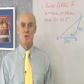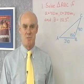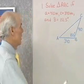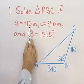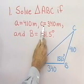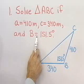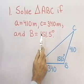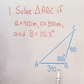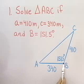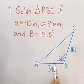In this section, we use the law of cosines to solve for the missing parts in some triangles. For our first problem, we have to solve triangle ABC if side A is 410 meters, side C is 340 meters, and angle B is 151.5 degrees. You can see I've drawn a little picture right here of the situation. Angle B is included between sides A and side C.